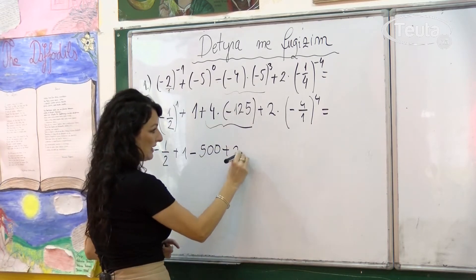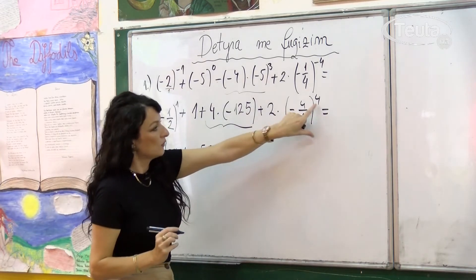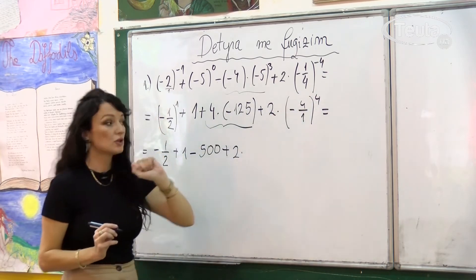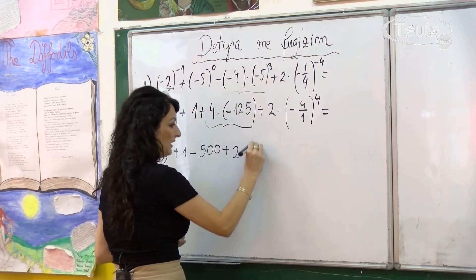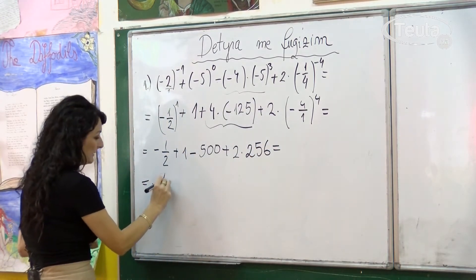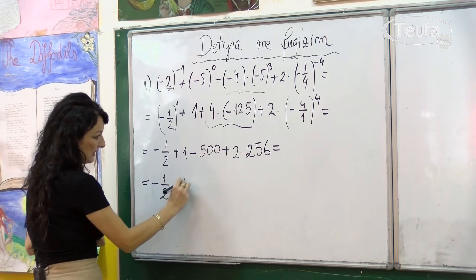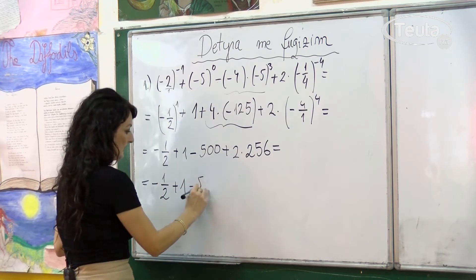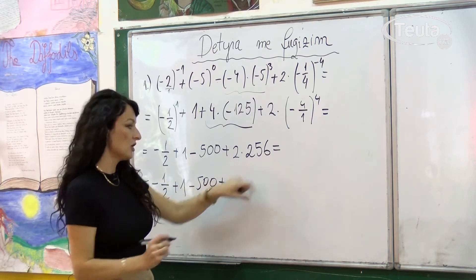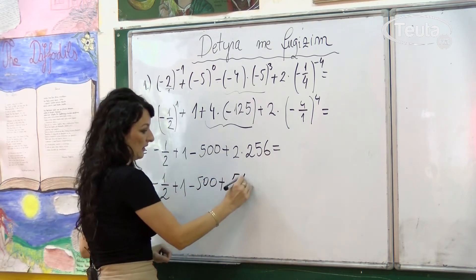Atëherë kemi plus 2 herë. Përshkon këtu minusi dhe këtu 4 në eksponent, kjo eliminohet, kurse 4 në fuqinë e 4 është 256, pra herë 256. Atëherë, në vazhdim më gjatë: minus 1 e 2 ta plus 1, kemi minus 500 dhe plus 2 herë 256 është barabar me 512.